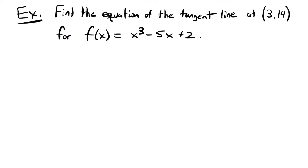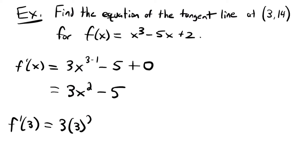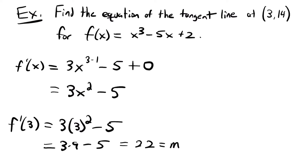Let's take the derivative. f prime of x equals 3 times x to the 3 minus 1, which is 3x squared, minus 5 — because the derivative of a constant times a variable to the first power is just the constant — and the derivative of 2 is 0. So f prime of x simplifies to 3x squared minus 5. Now we plug in x equals 3: f prime of 3 equals 3 times 3 squared minus 5, which equals 3 times 9 minus 5, which equals 27 minus 5, which equals 22. That is our slope m for the tangent line.